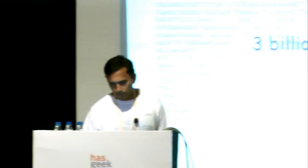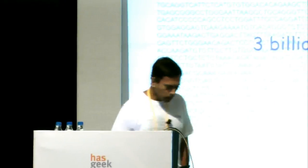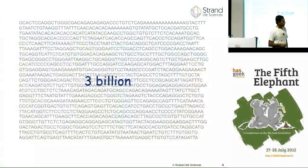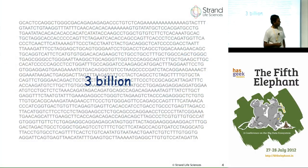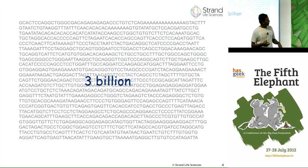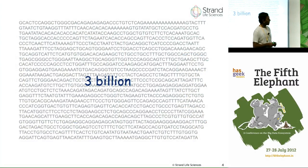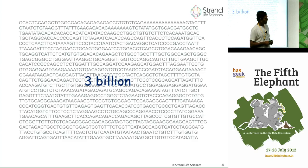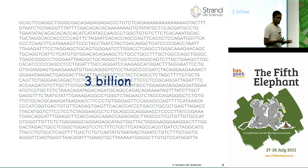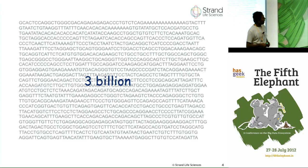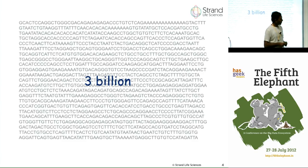We know today that the program sitting inside that DNA is made up of just four letters: A, G, C, and T — just like a computer program is written in the Roman or English alphabet. So rather than A to Z and digits, here there are just four characters.